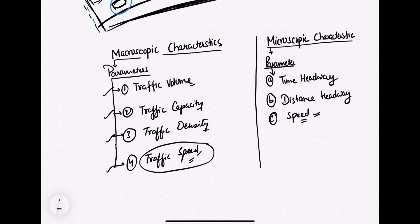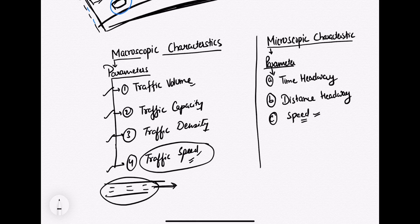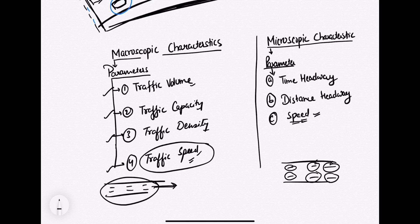The difference between speed in macroscopic and microscopic characteristics is that in macroscopic, you are considering the overall traffic speed — the cumulative or overall movement of vehicles together. While in microscopic, you are interested in the speed of each individual vehicle or the average speed of a single vehicle. So I hope this is clear to you.